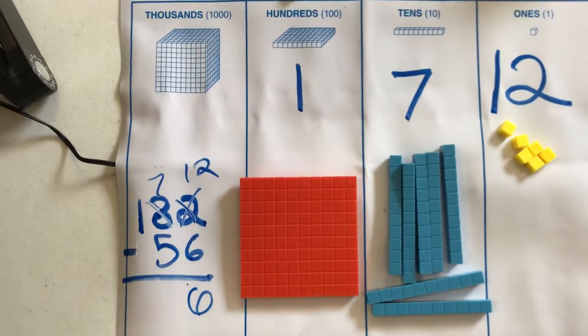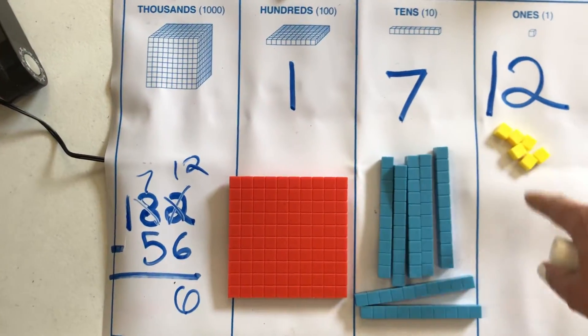12 minus six is six. Does that make sense? Do I have six here? One, two, three, four, five, six. Yes, I do.